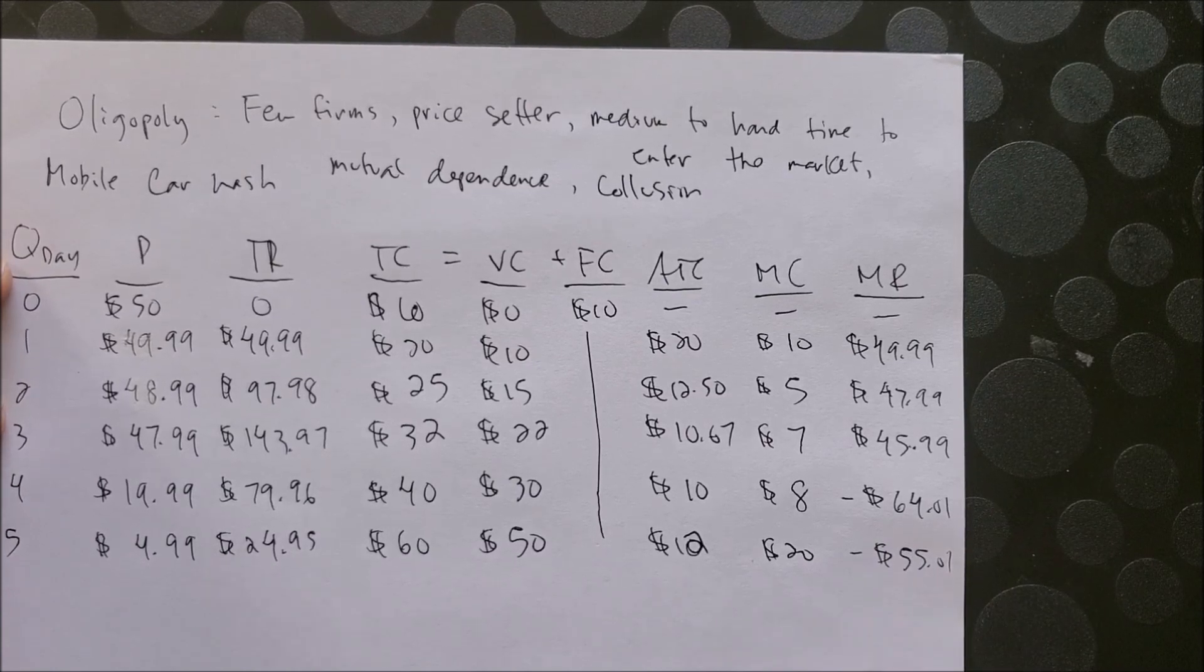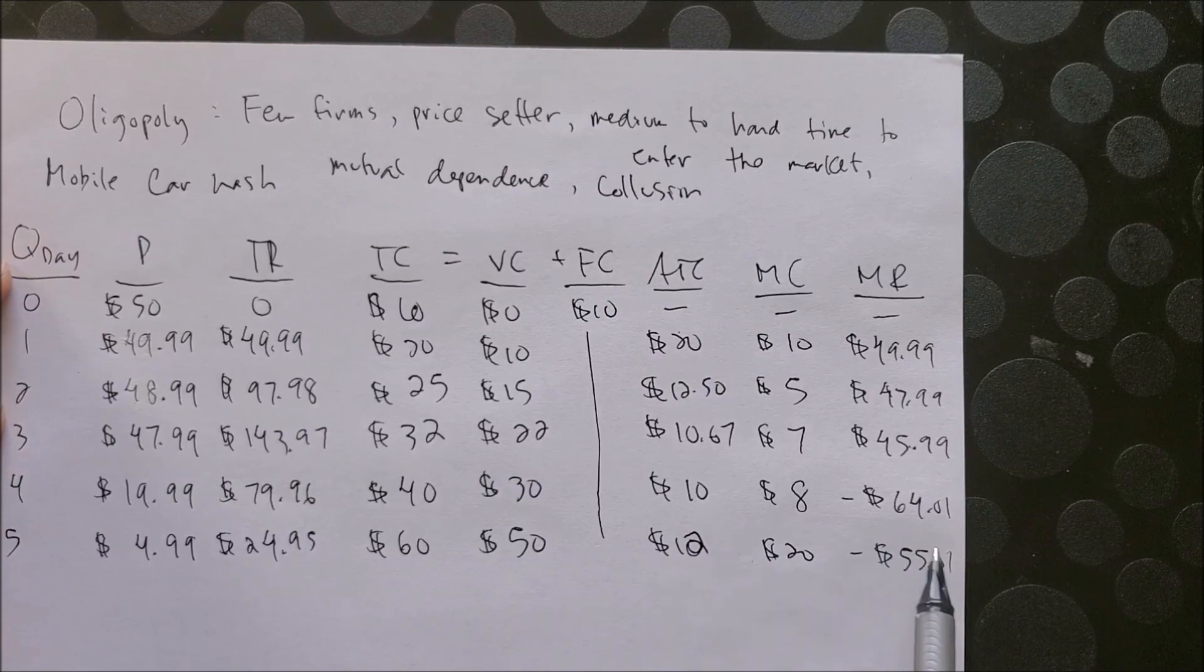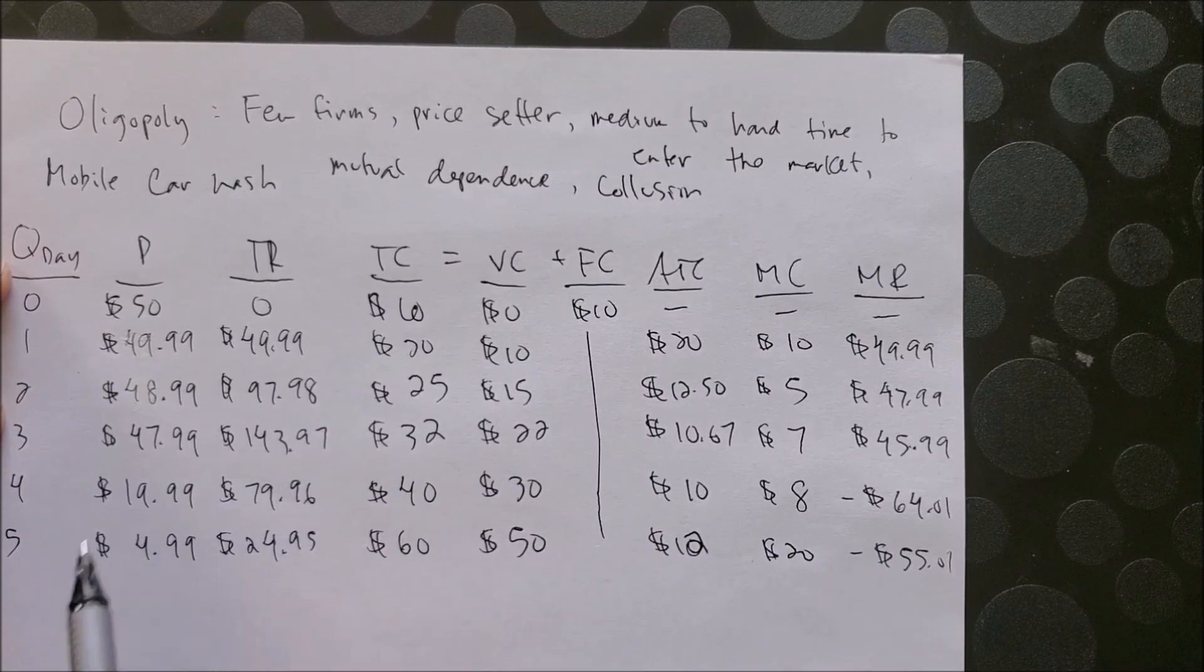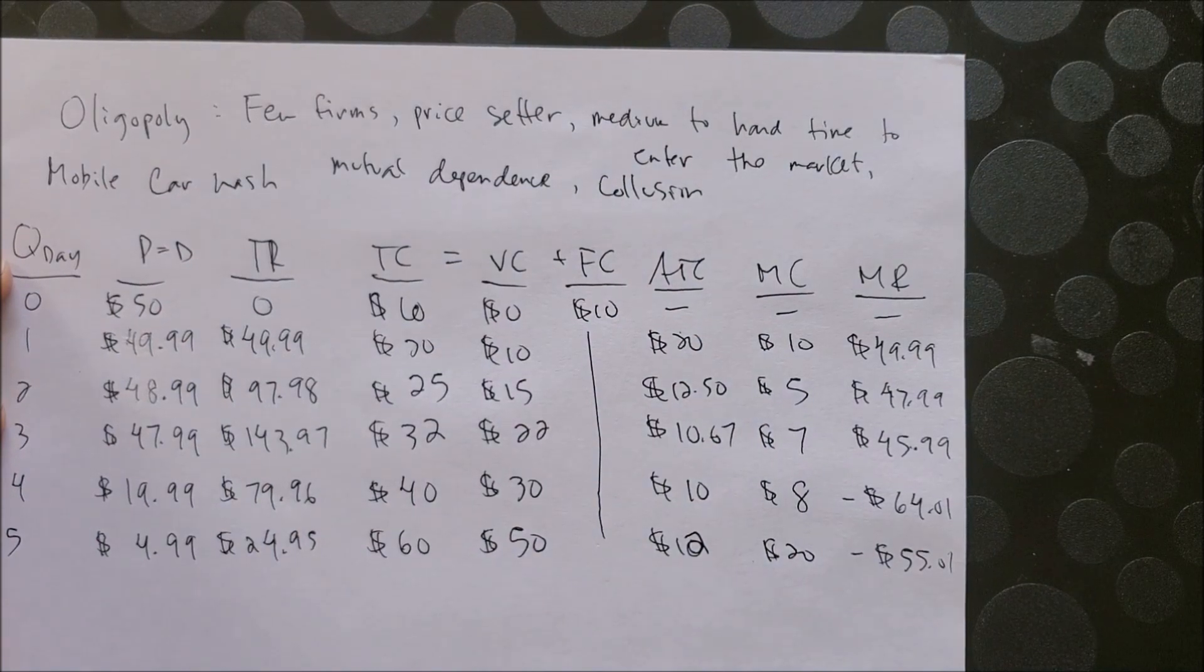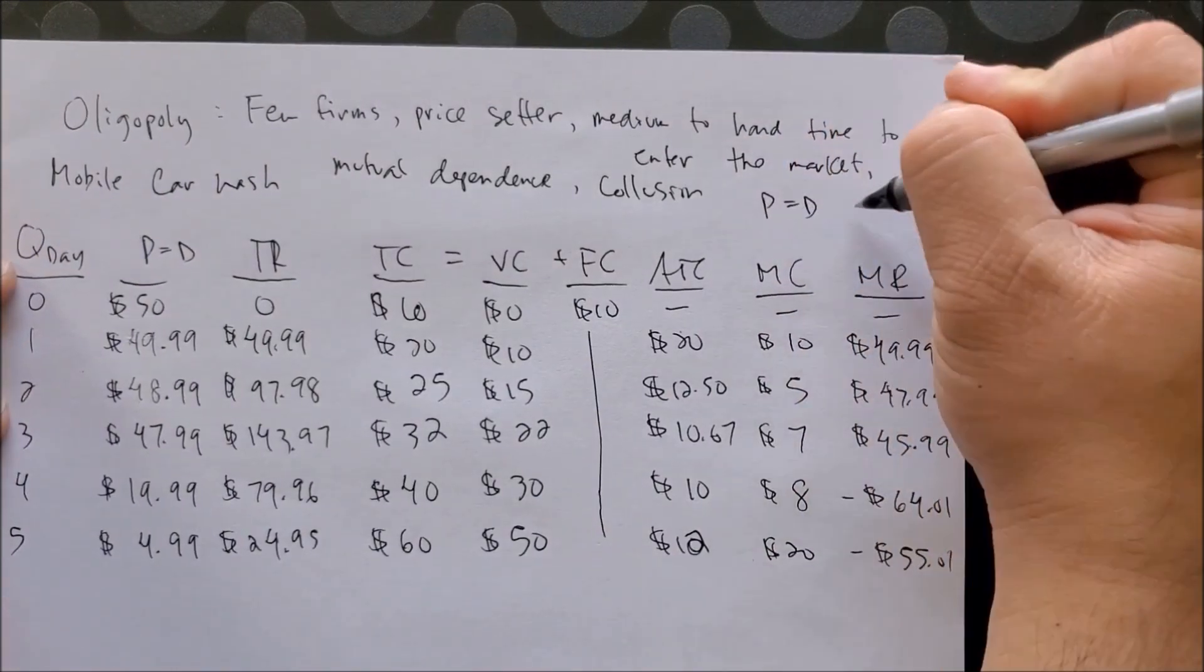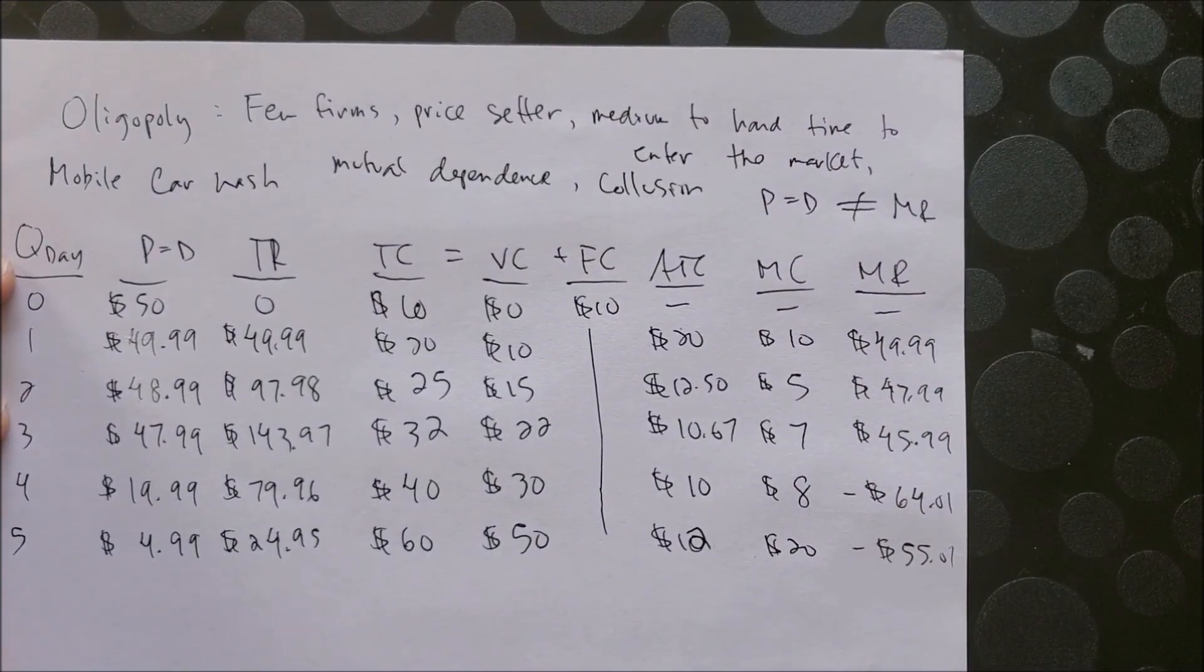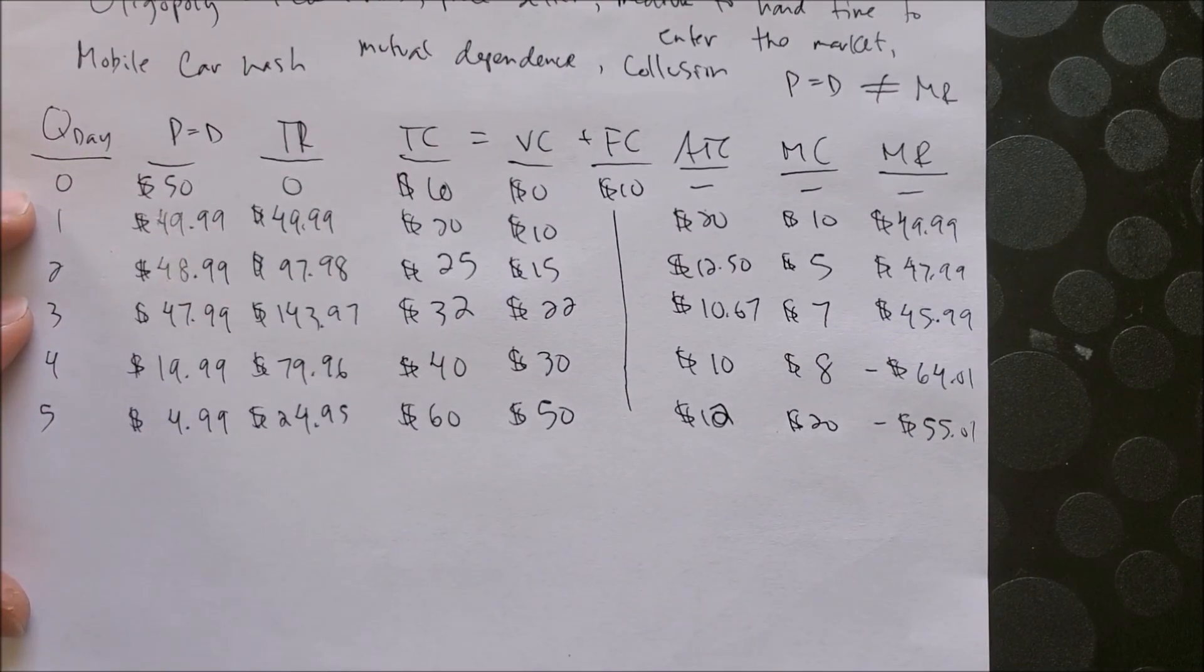More importantly, now we can graph the last three columns and price, which is also our demand curve. Like a monopoly market and also a monopolistic competitive market, price, which is demand, does not equal MR in an oligopoly market. So now we can graph the following columns.